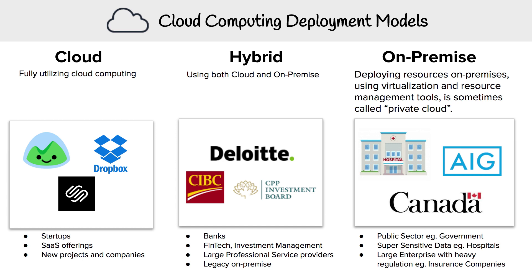On-prem is when you are deploying resources on premises using virtualization and resource management tools, and is sometimes called private cloud. On-prem is still being utilized by a lot of companies today. Generally, you will see the public sector — the government has on-prem data centers. When you're dealing with super sensitive data, such as hospitals with health records, there is an aversion to putting that into the cloud, or you have large enterprises with heavy regulation, such as insurance companies.